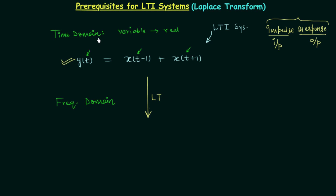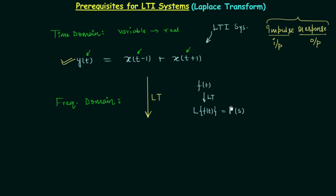We have the system relationship in the time domain, and by using the Laplace transform we will transform this relationship to the frequency domain. Once we have the relationship in frequency domain we can easily obtain the impulse response. There must be some formula to find the Laplace transform. For a function f(t) in time domain, the Laplace transform is represented as L{f(t)} or equivalently F(S), converting the time-domain function to the frequency domain.